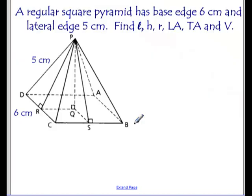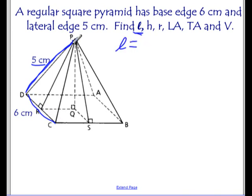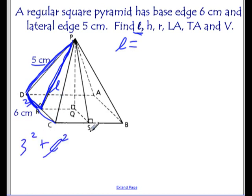Let's apply these formulas to a problem. I've got a pyramid with a lateral edge PD of 5 centimeters and a base edge of 6 centimeters. First, let's find L, the slant height. Using the right triangle with the slant height as one leg and half the base edge — so 3 centimeters — as the other leg, with the lateral edge as the hypotenuse: 3 squared plus L squared equals 5 squared. You may recognize that as the 3-4-5 Pythagorean triple, so the slant height is 4 centimeters.